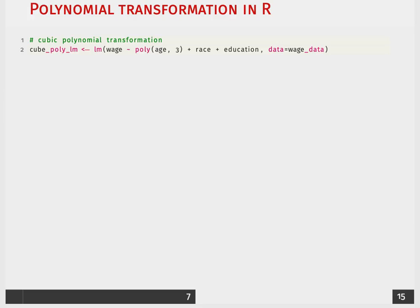I'm going to then fit our cubic polynomial model, where I'm adding this variable poly with age and 3. So 3 is essentially saying I'm taking the cube of it. I could also add in each individual predictor if I wanted to, but this is a much easier way of doing it.